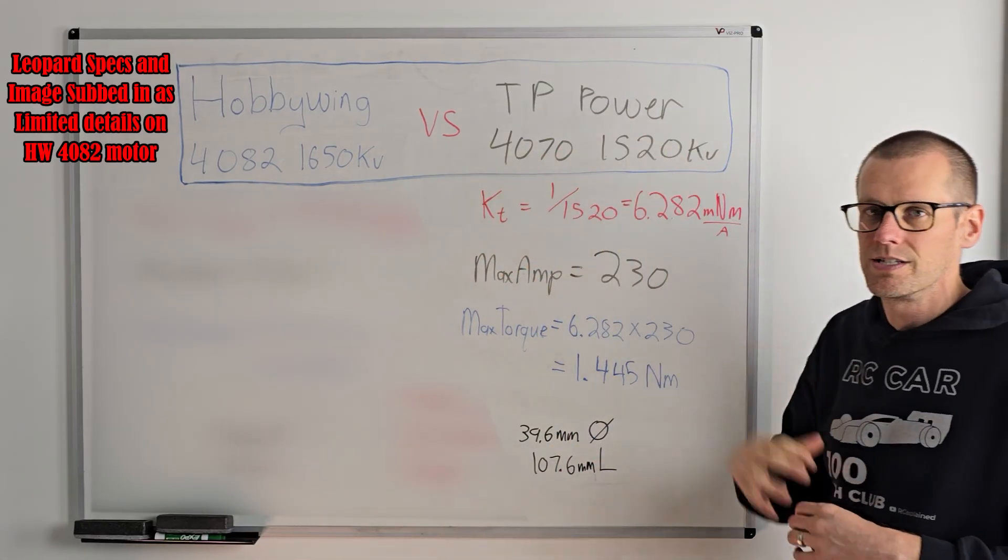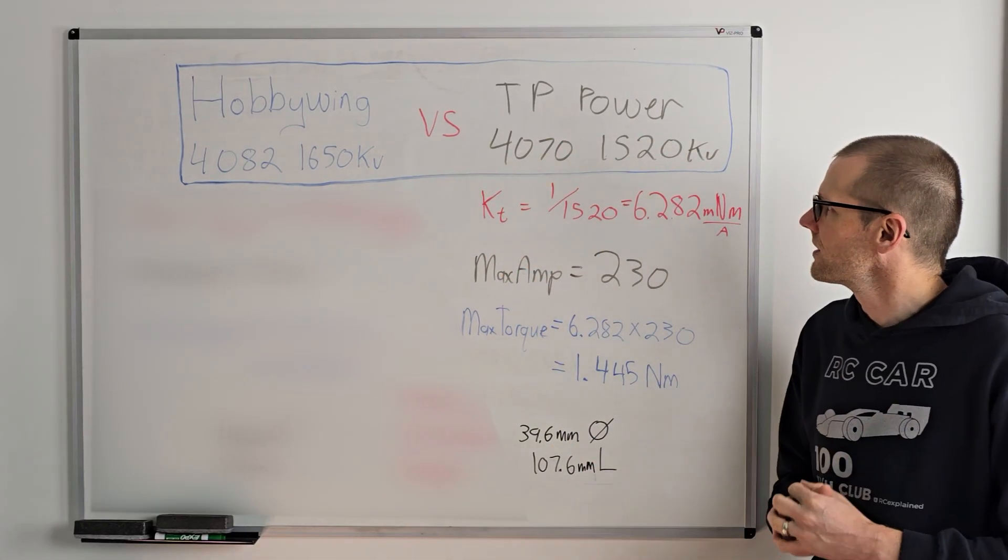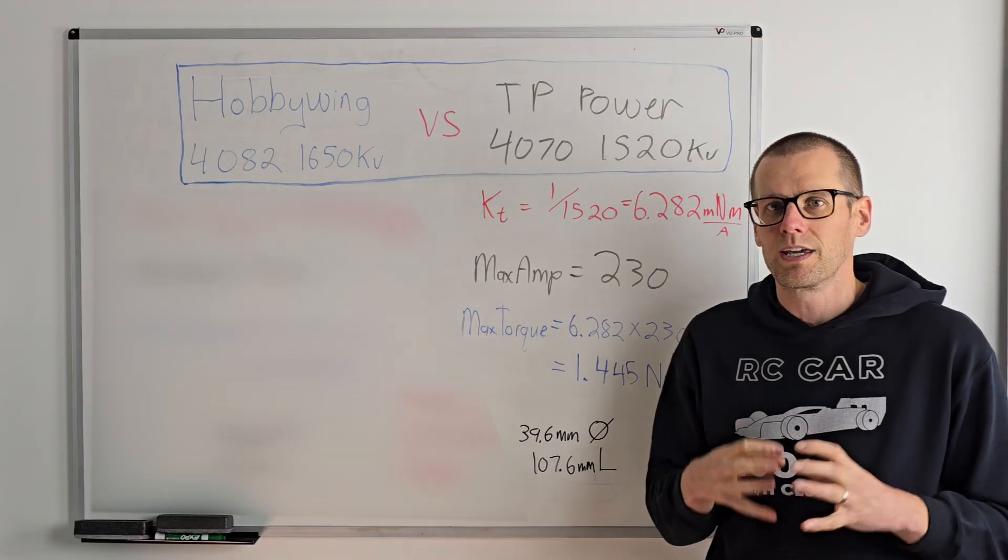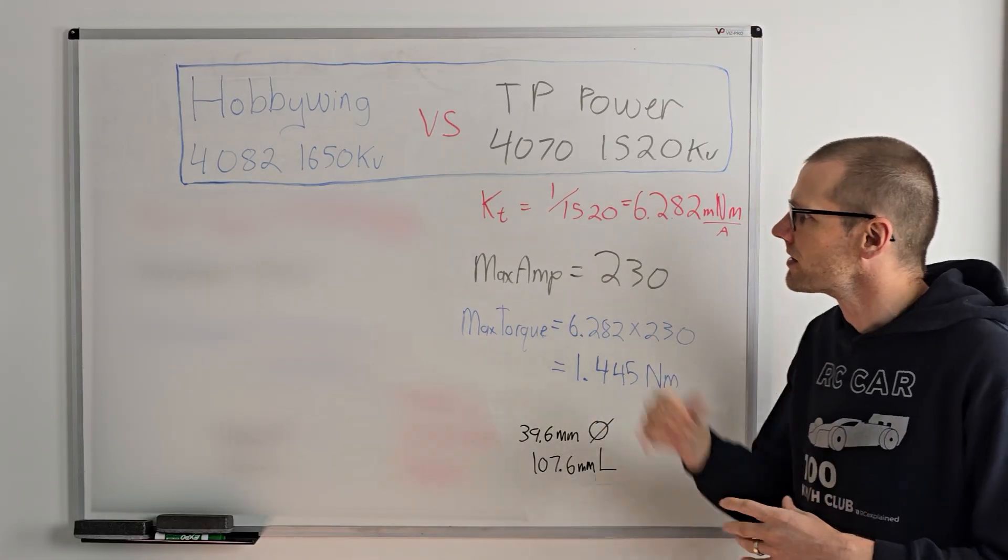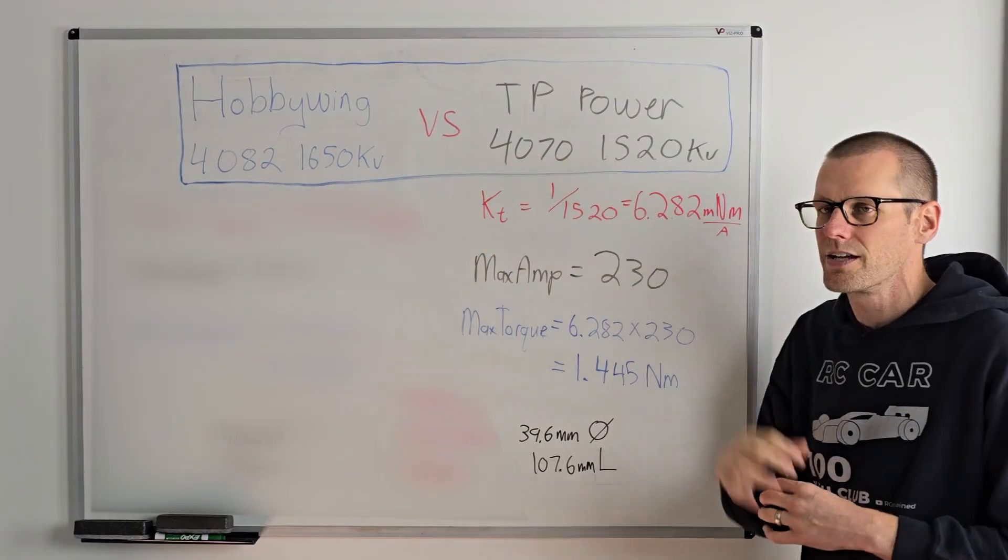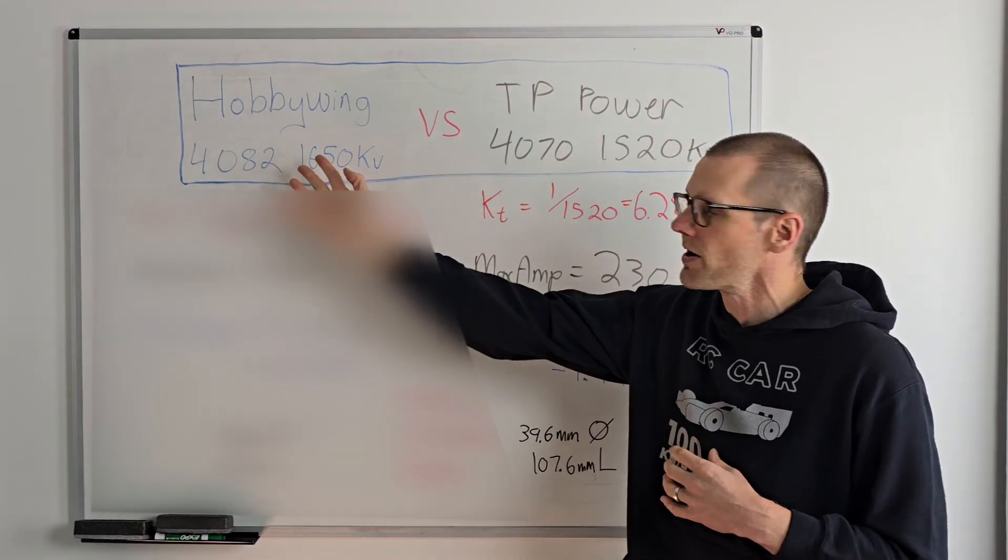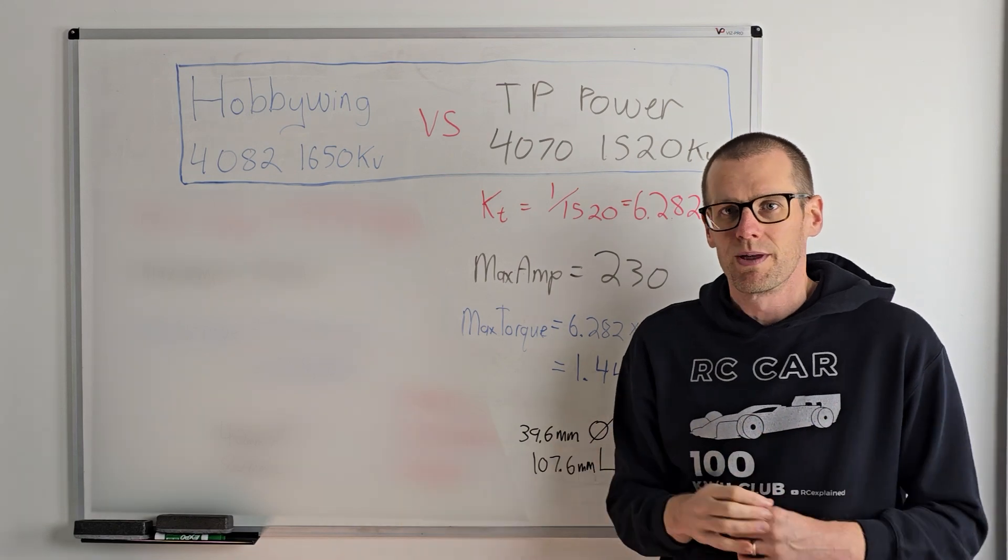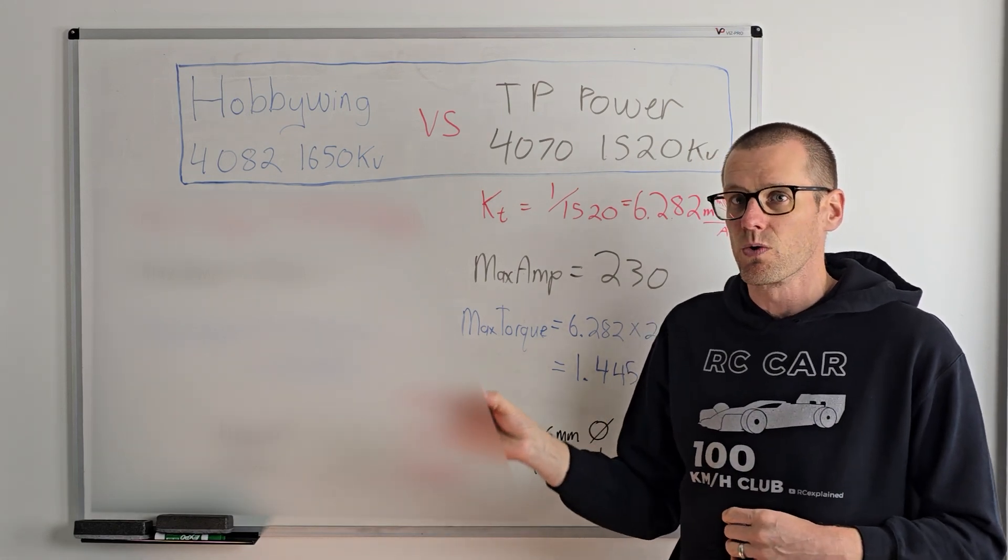The other brushless motor is the TP power. It's a 4070 1520 kV. So just off the hop it looks like these numbers look bigger than these numbers. So we'd expect that this brushless motor might be better, but that's not exactly how this works out.